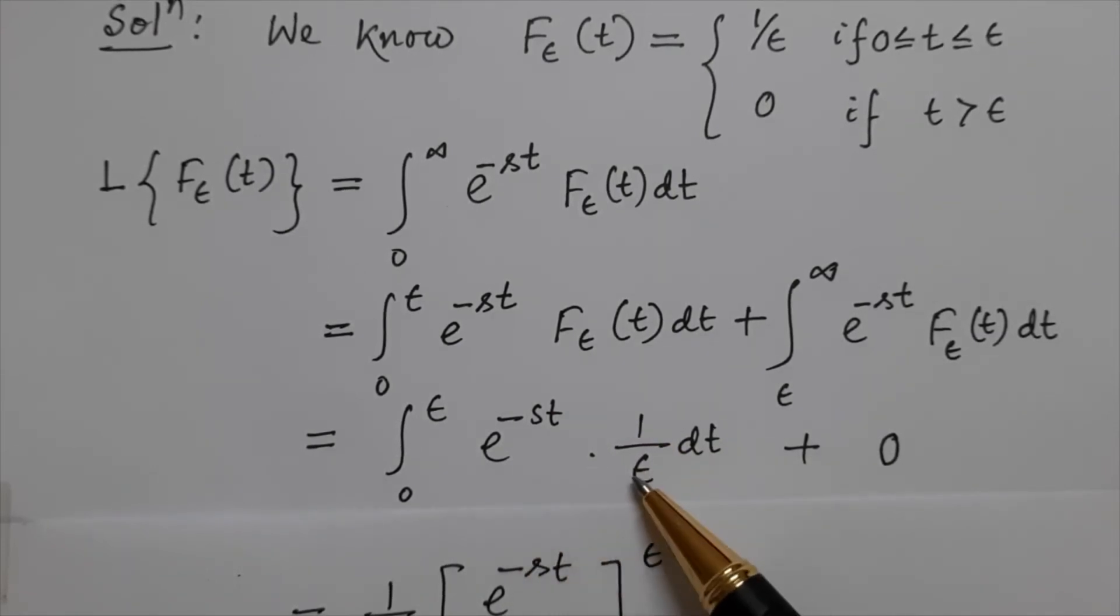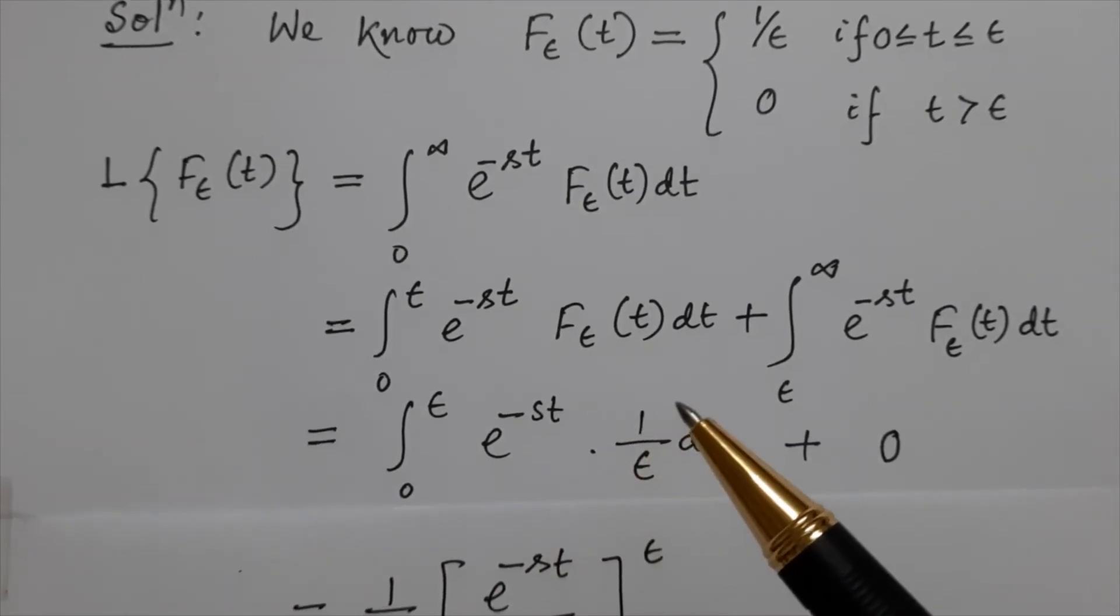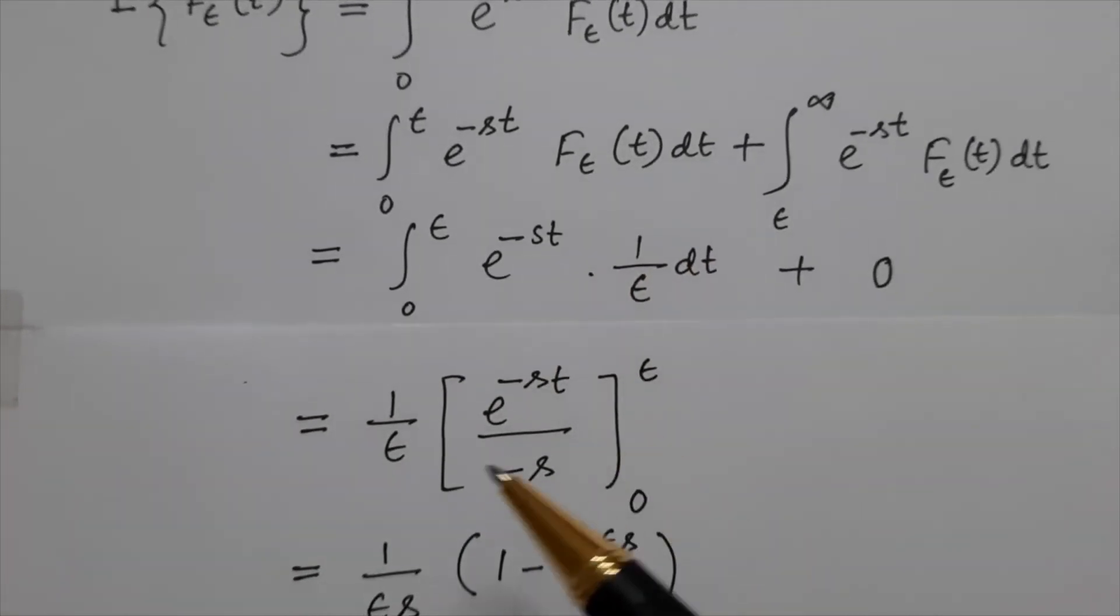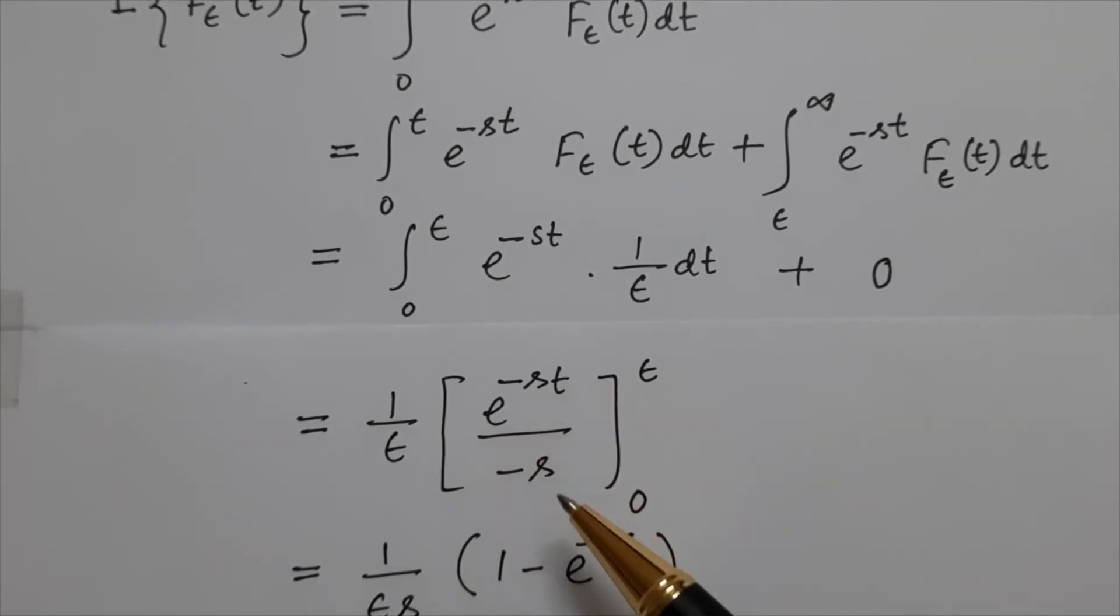Let us integrate this. 1/ε is outside the integration. The integration of e^(-st) is e^(-st)/(-s).